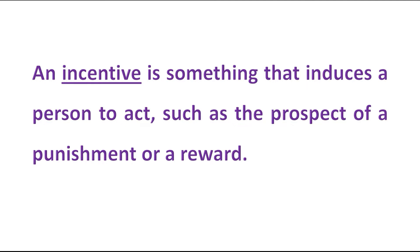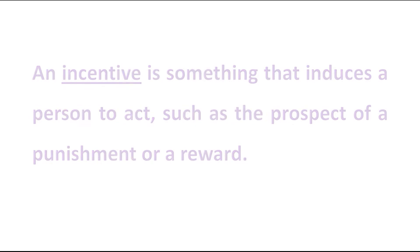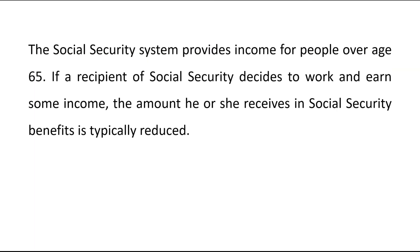Let's understand this meaning with the help of numerical examples. The first one: the social security system provides income for people over age 65. If a recipient of social security decides to work and earn some income, the amount he or she receives in social security benefits is typically reduced.